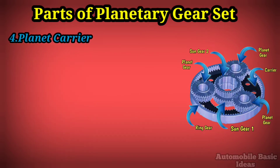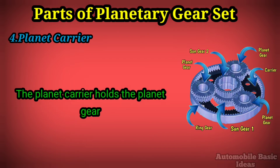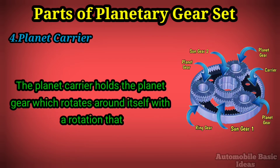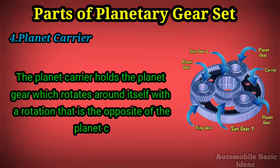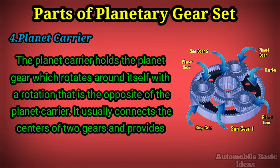Four: Planet carrier. The planet carrier holds the planet gear, which rotates around itself with a rotation that is opposite to that of the planet carrier. It usually connects the centers of two gears and provides support for them to roll without slipping.